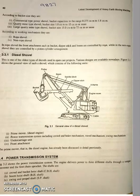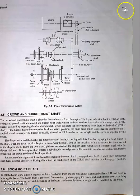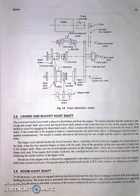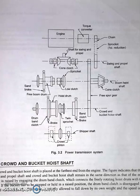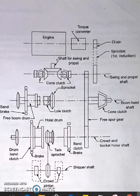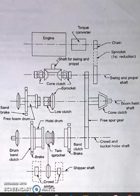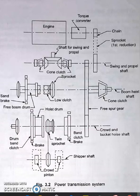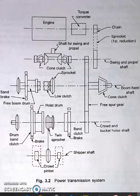Let's start with the power transmission system. The engine delivers power to three different shafts through a torque converter and the first chain sprocket. The shafts are: number one is crowd and bucket hoist shaft or CBH shaft. Second one is boom hoist shaft or BH shaft. Number three is swing and propel shaft or SP shaft.